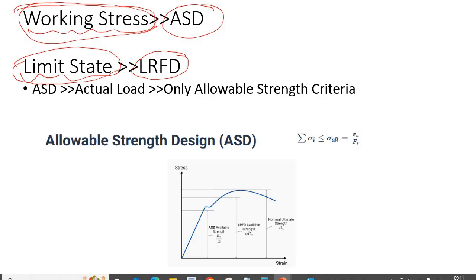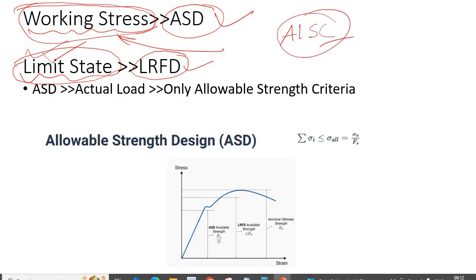The working stress name suggests we should work as per the stress coming due to actual load or working load — it's a bit confusing. And 'limit state' — which state is limiting, what is the limit state? All of these are confusing. That is why I personally prefer ASD or LRFD, which are also the conventional terms used in AISC and are much easier to remember.